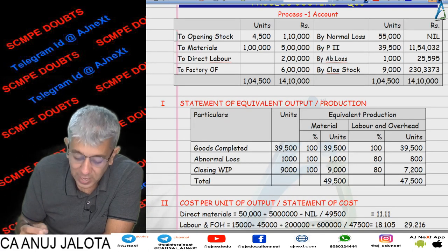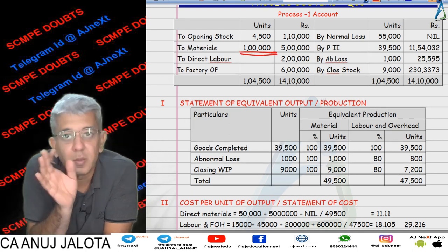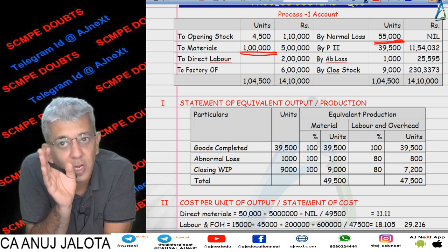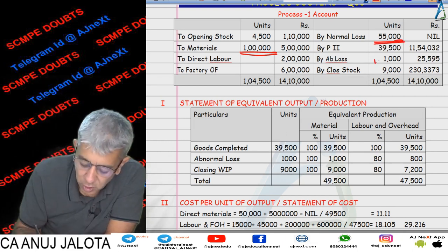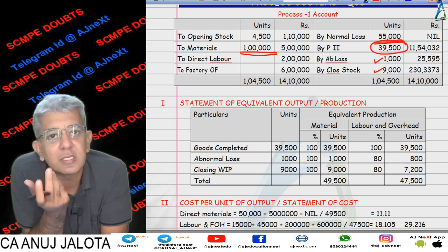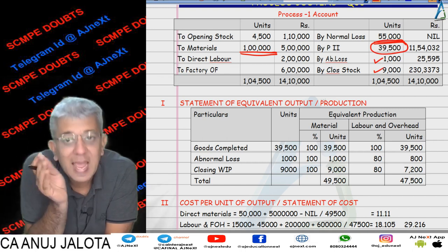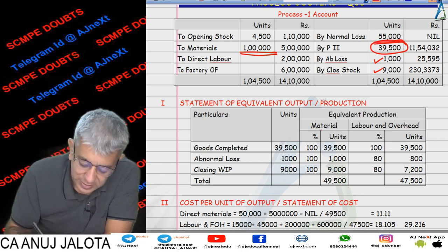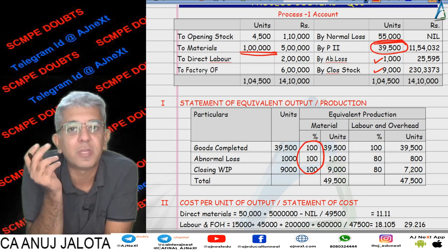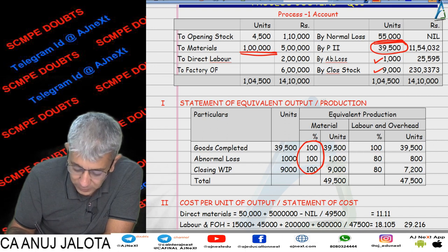In my answer, the input was 1 lakh in this particular case. Out of that, 55% — that is 55,000 — was supposed to be normal loss. The abnormal loss is given to us, the closing stock is there, and then the output is the balancing figure. Since the data is in kgs and liters, the entire material stage of completion will by implication be 100 percent. We have all done questions like this.